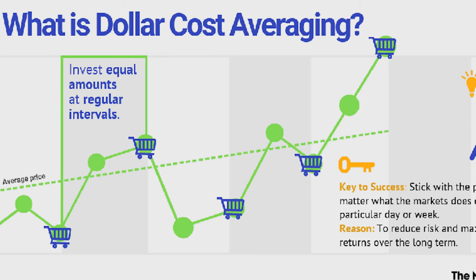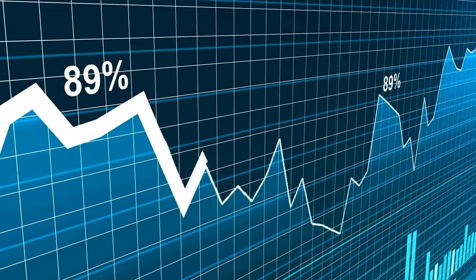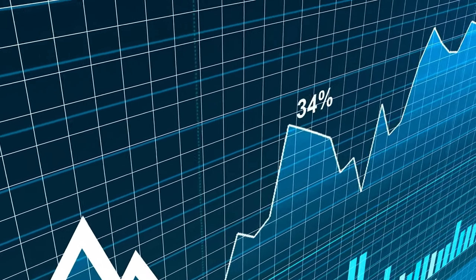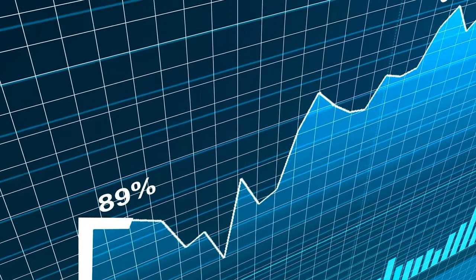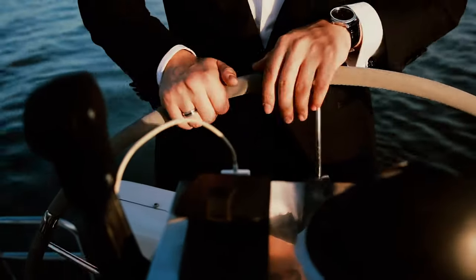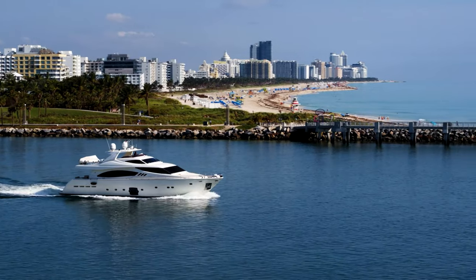Dollar cost averaging is the practice of investing a fixed dollar amount on a regular basis regardless of the share price. It's a good way to develop a disciplined investing habit, be more efficient in how you invest, and potentially lower your stress levels as well as your cost. Dollar cost averaging is by far the easiest way to invest for beginner investors. In fact, very advanced investors — millionaires, multi-millionaires, and some billionaires — use this exact same strategy. So why not do it yourself with just five dollars?